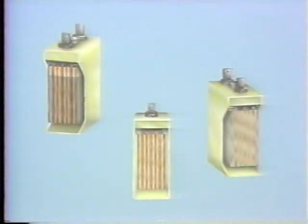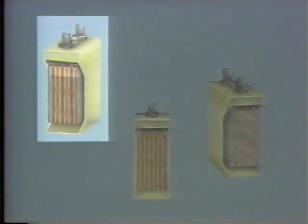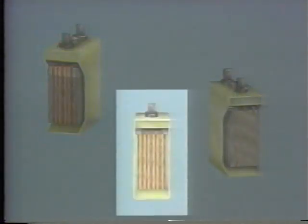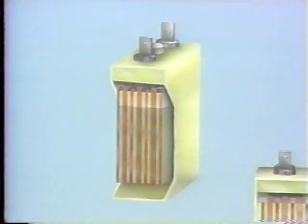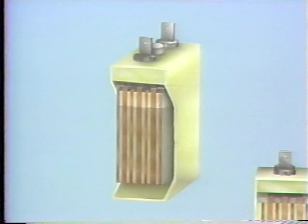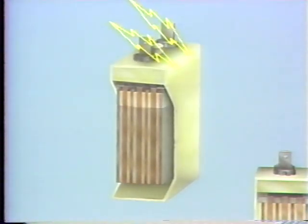Every so often, one cell of a station battery will fail to take a charge. In many cases, the only solution is to replace it with a new cell. The replacement cell may come from the manufacturer in any one of three conditions: wet charged, dry charged, or dry uncharged. A wet charged cell has activated plates of lead and lead peroxide, and it's already been filled with electrolyte by the manufacturer. Before it's installed, all it needs is a slow freshening charge at the finishing rate shown on the cell's nameplate.